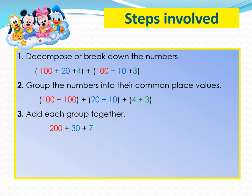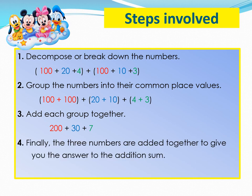Step number 4. Finally, the three numbers are added together to give you the answer to the addition sum. 124 plus 113 is equal to 237.